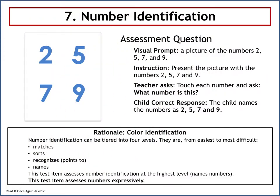Assessment question 7 requires number identification. The visual prompt is a picture of the numbers 2, 5, 7, and 9. The teacher touches each number and asks: What number is this? The child's correct response is to name the numbers as 2, 5, 7, and 9. The rationale: number identification can be tiered into four levels from easiest to most difficult — matches, sorts, recognizes or points to, and names. This test item assesses number identification at the highest level — names numbers — and assesses numbers expressively.